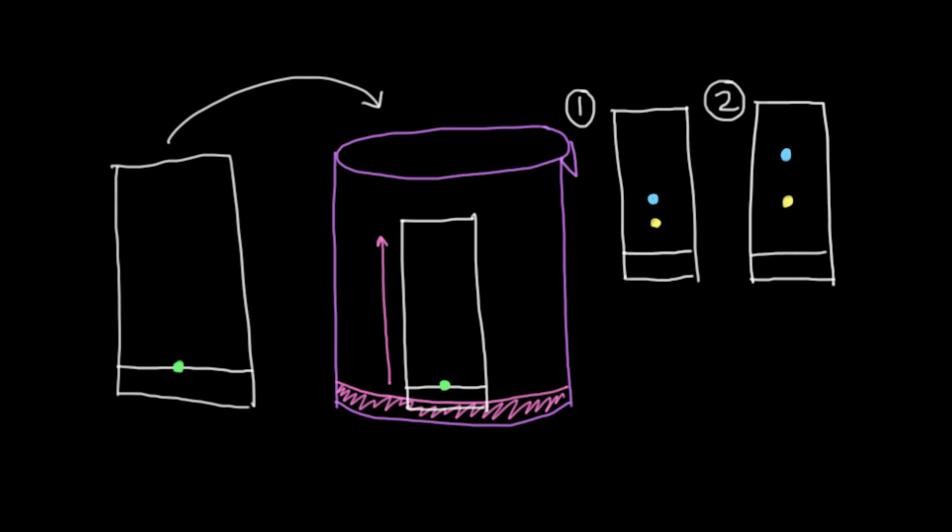So ultimately, what you've shown here is that whatever was in the green spot originally wasn't just one compound. It was two compounds.